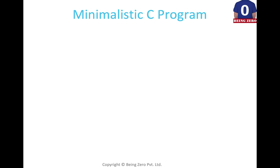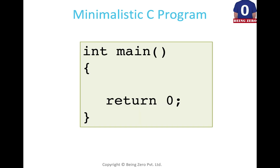Let's talk about what is going to be our minimalistic C program. Whenever we say we are writing a C program, we must start with something fixed and clear in our head. This program — if you see — is: int main() with two round brackets, then a starting curly bracket and an ending curly bracket.